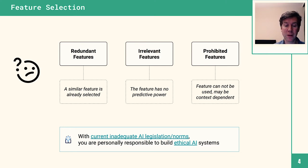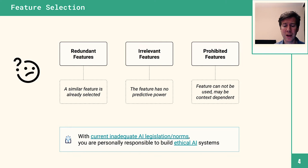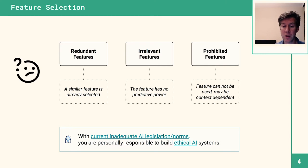Techniques such as a correlation matrix — automatically computed in the feature store, or computed yourself using pandas — can help you identify redundant features. Irrelevant features are straightforward: if a feature has no predictive power over your model whatsoever, you shouldn't include it. It's easy to say you'll just add more and more features because you have a feature store, but if they're irrelevant it will take longer for your model to converge and require more compute.